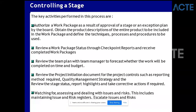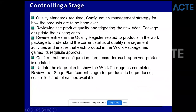What is a product description? A product description is nothing but the requirements - what you need to deliver as per the business case or requirement. Controlling a Stage also covers: quality standards required, configuration management strategy, how products are to be handed over, triggering a new work package or updating an existing one, reviewing quality register entries related to products in the work package to understand the current status of quality management, confirming the configuration item records, and updating the stage plan to show that the work package is completed. It's about governance and making sure quality is maintained.